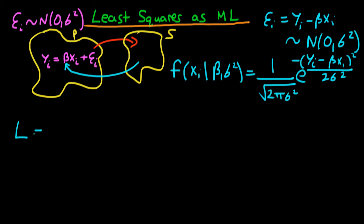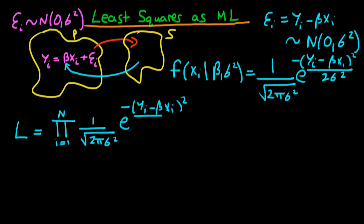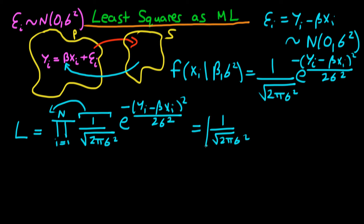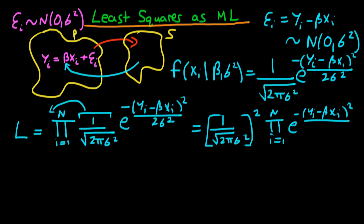In general, we have a sample of n observations, so we're going to define the conditional probability distribution for all n points. Assuming the points in our sample are independent of one another, we form this by taking the product of all the individual likelihood functions. This simplifies to (1 / sqrt(2*pi*sigma²))^n times the product from i=1 to n of exp(-(yi - beta*xi)² / (2*sigma²)).